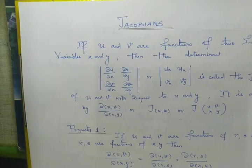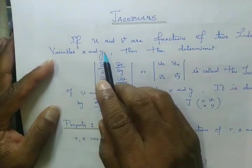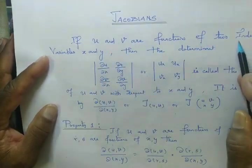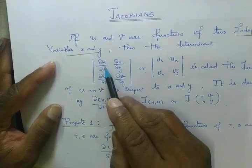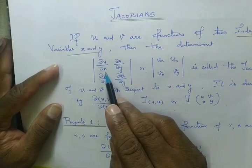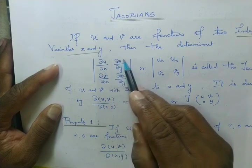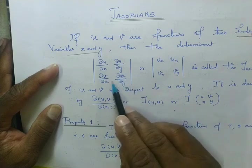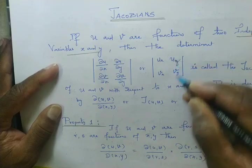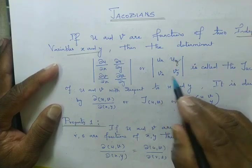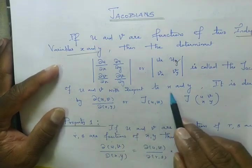Good morning friends. If u and v are functions of two independent variables x and y, then the determinant of partial u by partial x, partial u by partial y, partial v by partial x, partial v by partial y — it is called the Jacobian of u and v with respect to x and y.